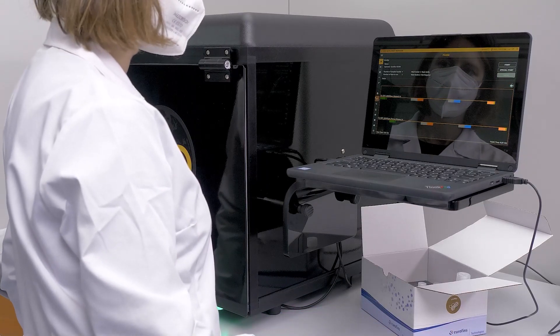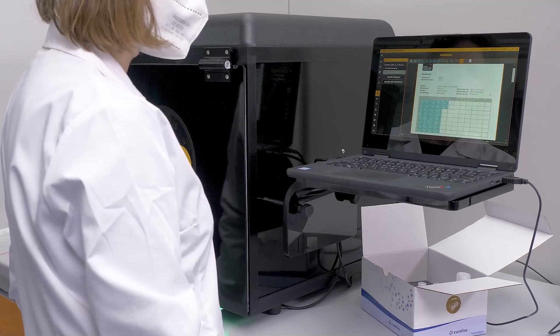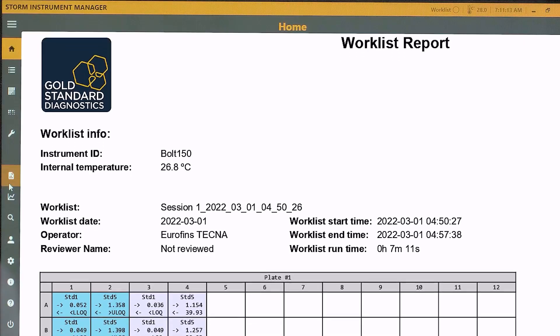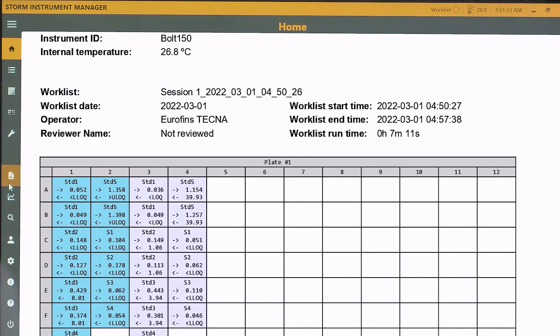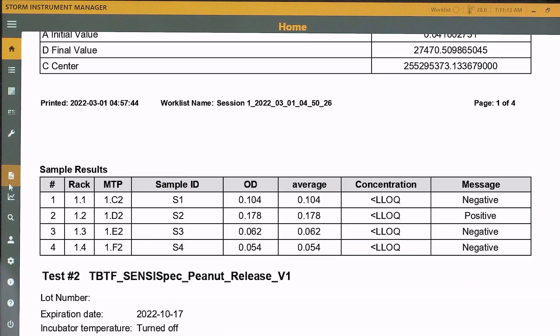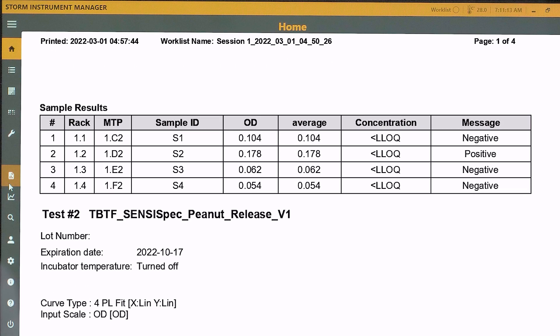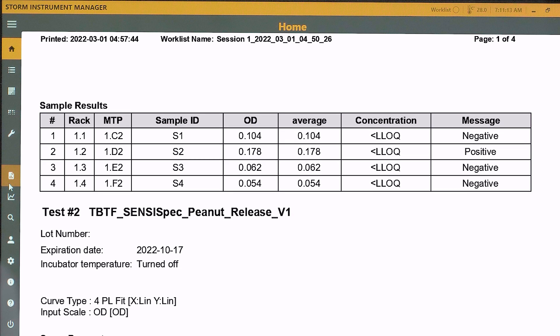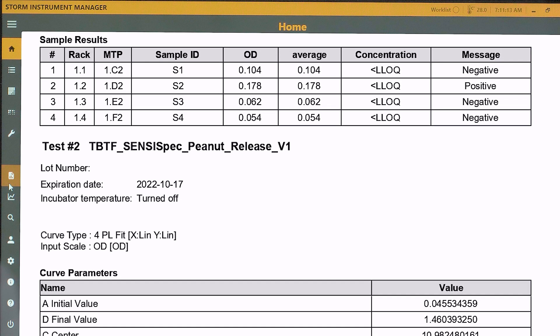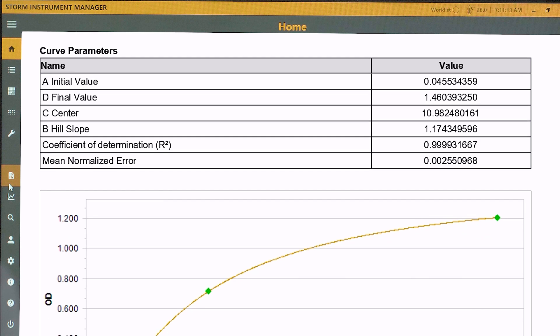Bolt automatically records the absorbances of each well and automatically calculates the results, without the typical manual copy and paste steps. The values are included directly in a final report and are then available to be exported into Excel for further processing.